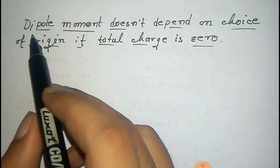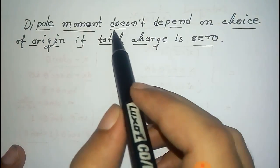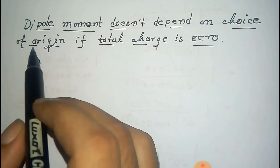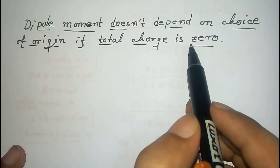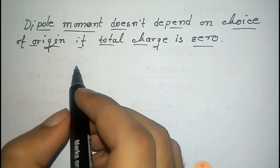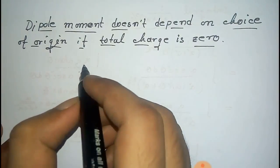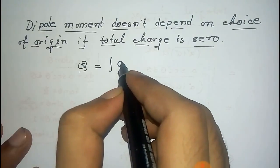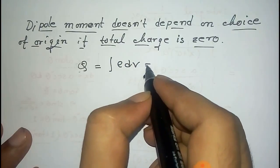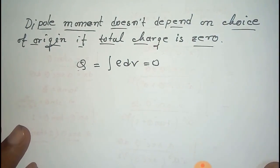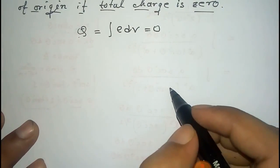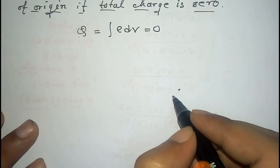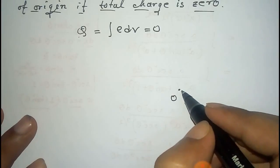We have to prove that dipole moment is independent of origin if the total charge is zero. That is, the total charge Q equals integral ρ dv, where ρ is the charge density, equals zero.